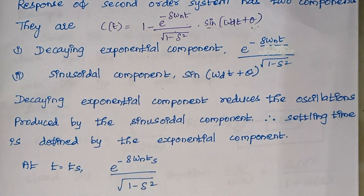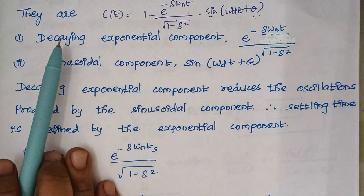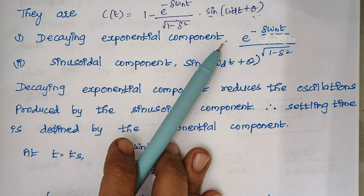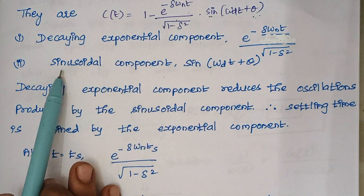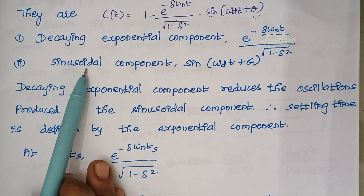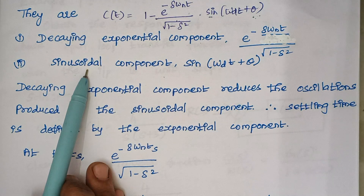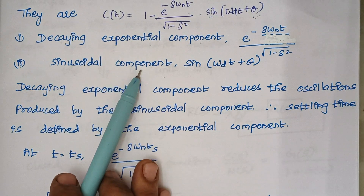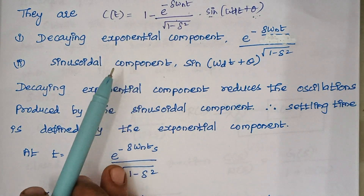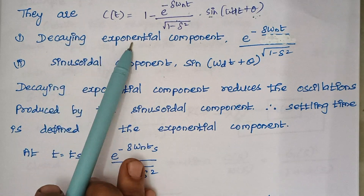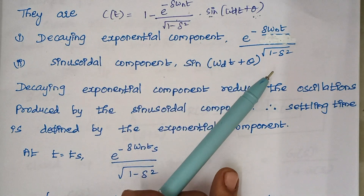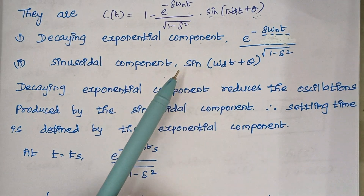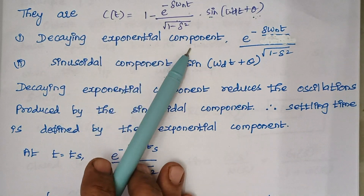The sinusoidal component will always produce some oscillations because it is a sinusoidal wave — a sinusoidal wave is one whose value will change automatically for every half cycle. So the sinusoidal component is the reason for producing oscillations, whereas the decaying exponential component is the one which reduces or dampens the oscillations. So the settling time mainly depends upon the decaying exponential component.